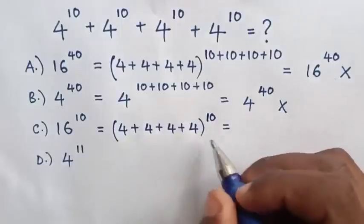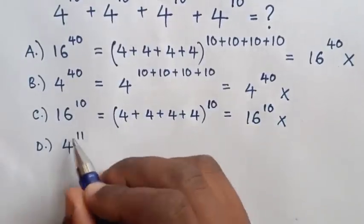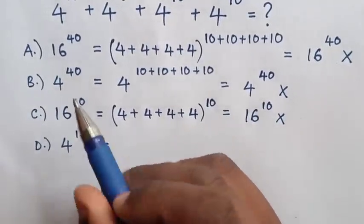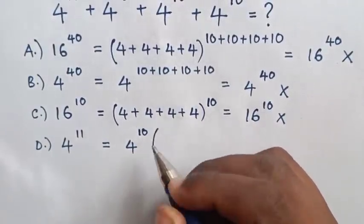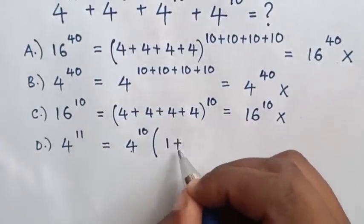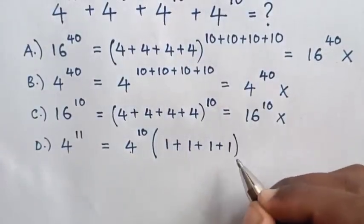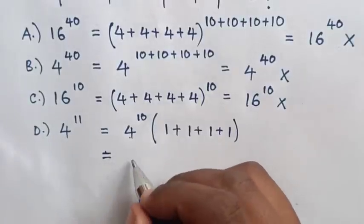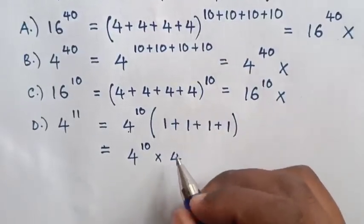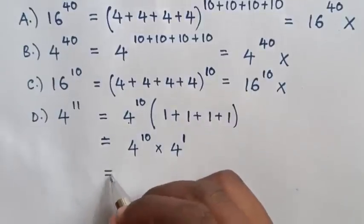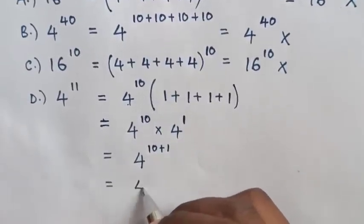Answer D is probably the correct answer. Since 4 power 10 is the common exponent, we factor 4 power 10 out of the bracket. Each term divided by 4 power 10 equals 1, giving us 1 plus 1 plus 1 plus 1 inside the bracket, which equals 4. So this equals 4 power 10 times 4, and since 4 equals 4 power 1, this gives us 4 power 11.